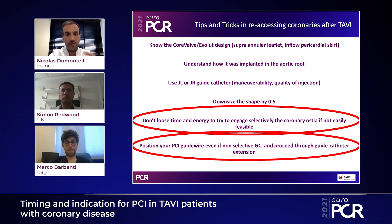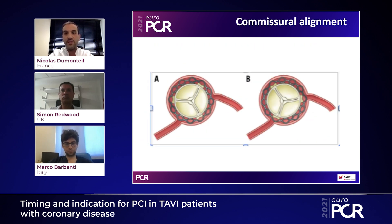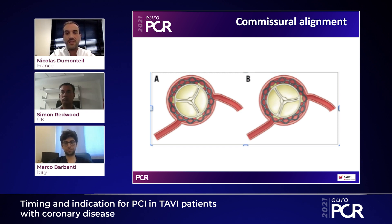It's also worth considering how to prevent re-access difficulties in the first place. The concept of commissural alignment of a transcatheter heart valve has been developed to avoid having the valve posts positioned in front of the coronary arteries. This is illustrated by two diagrams on screen: on the left, good commissural orientation; on the right, bad commissural alignment creating difficulty re-accessing the coronary arteries.